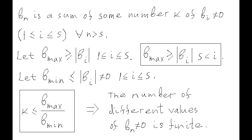Let b_min be the smallest absolute value of all members b_i where i varies from 1 through s. Then the absolute value of member b_n is at least k times b_min. On the other hand, the absolute value of b_n doesn't exceed b_max. From this, it follows that k doesn't exceed b_max divided by b_min. Since the number of nonzero values among b_i (i from 1 to s) does not exceed s, and the number of additives in each b_n doesn't exceed the constant b_max over b_min, the number of distinct values that members of sequence b_n can assume is finite.